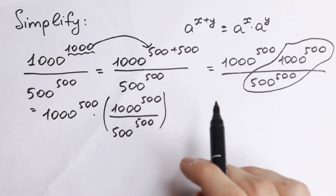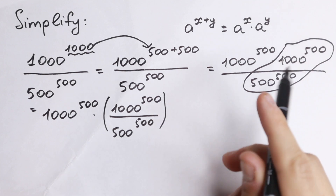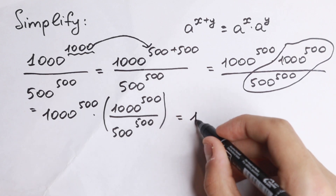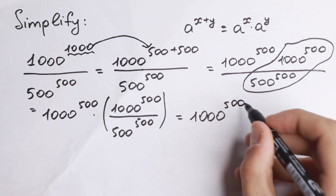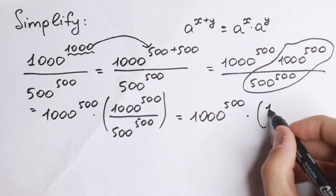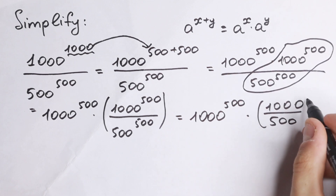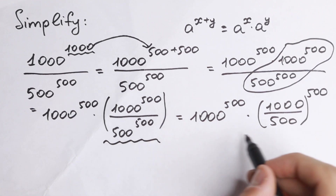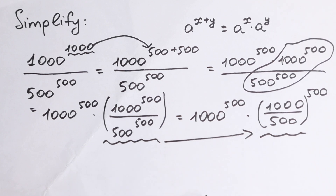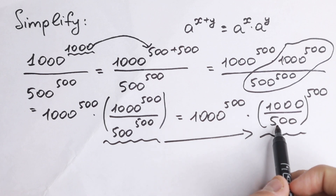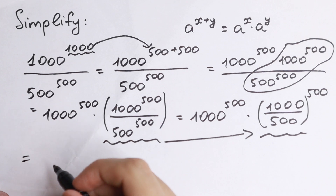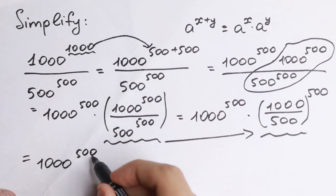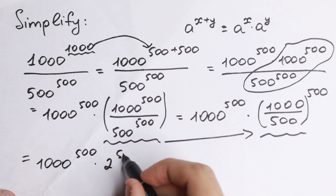Right now, as you can see, we have the same power right here. It's really good because we can easily write these bases in one parenthesis raised to the power of 500. So we have 1000 to the power of 500 times 1000 over 500, all raised to the power of 500. Now 1000 divided by 500 equals 2 — we all know this. So as a result we can write this as 2 to the power of 500 times 2 to the power of 500.